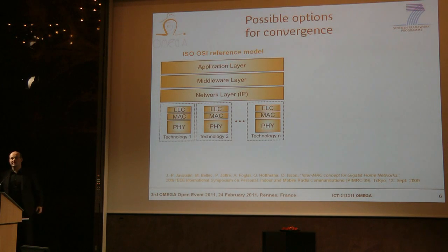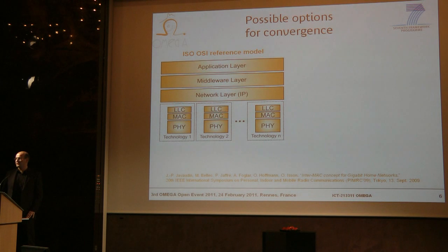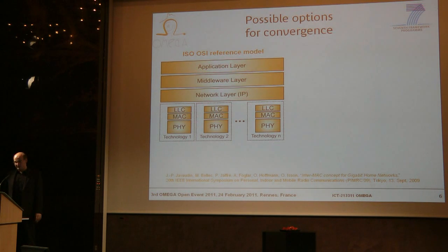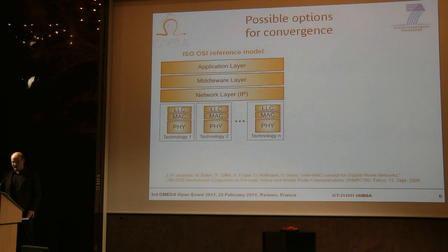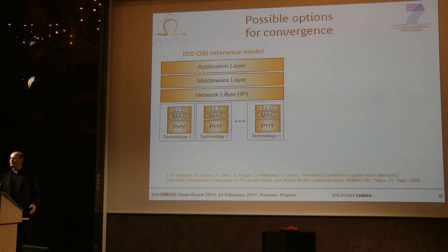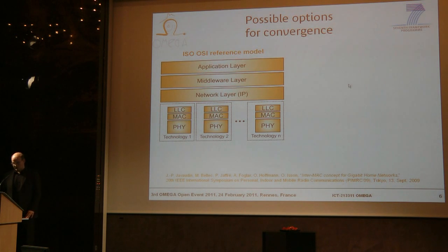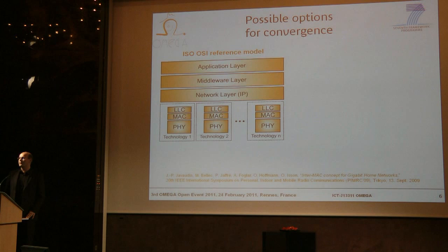Now, in the beginning of Omega, we made some thoughts about where this convergence can be achieved — how can we put everything together in the house? Here we see the ISO reference model: the application layer, a middleware layer summarizing the layers between the network layer and the application layer, then the network layer which is mostly based on IP, and several technologies consisting of a technology-dependent physical layer and a technology-dependent MAC layer. The authors have analyzed different options for convergence.